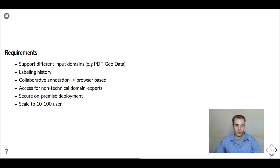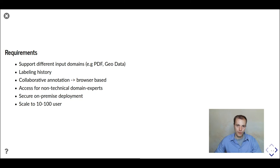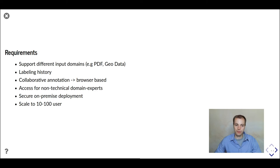Secure on-premise deployment is crucial in annotation since we often deal with sensitive data — whether for privacy reasons or because it contains important company information that cannot easily be put on the cloud. Scaling to 10 to 100 users is the target range: we don't want to scale infinitely, which would require completely different architectures. For many projects that's just not needed — so it's not a single user but something in the range of 10 to 100 users that we should be able to support.